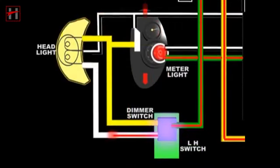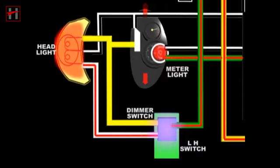As the dimmer switch is put to low beam, current from the white wire goes to the headlight low beam.